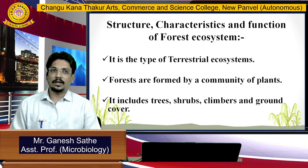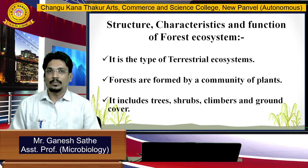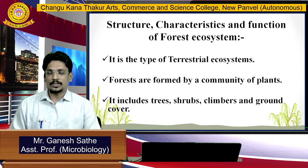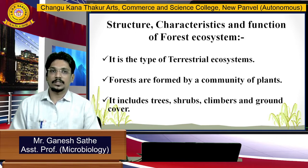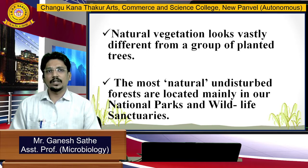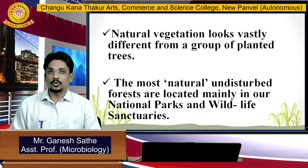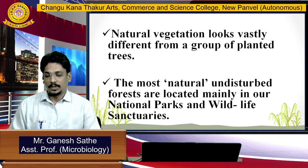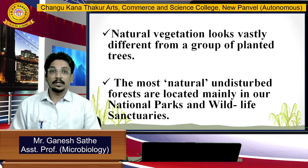Forests are formed by different communities of plants. Millions of plant species are available around the globe, and when they come together they form a forest. Forests have trees, shrubs, climbers, and ground cover. Natural vegetation looks vastly different from a group of planted trees because there is no controlling mechanism — plants grow as per their wish.